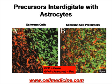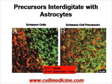The next question is whether the transplanted cells interdigitate and begin functioning with the recipient tissue. The green Schwann cell precursors (GFP donor) are shown alongside red recipient astrocytes. The Schwann cell precursors appear to interdigitate with astrocytes based on morphology, whereas the Schwann cells do not interdigitate with astrocytes.